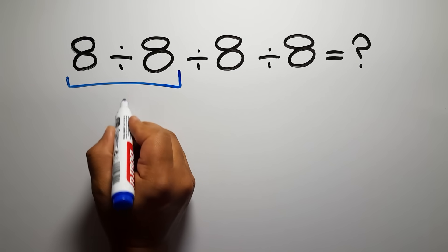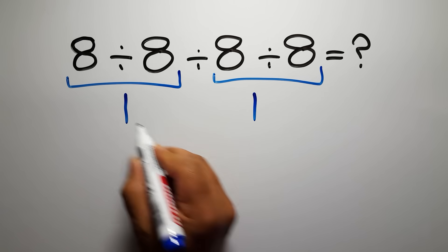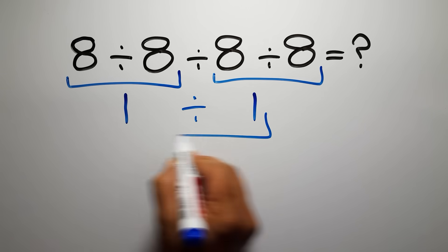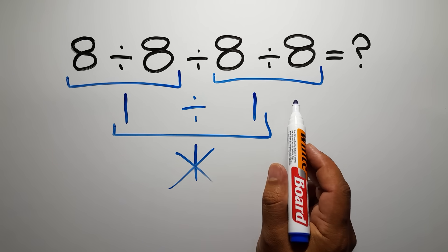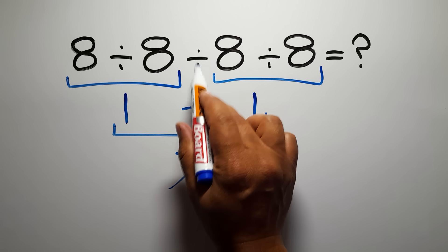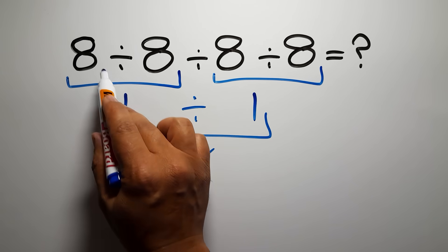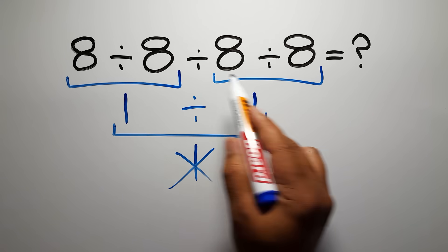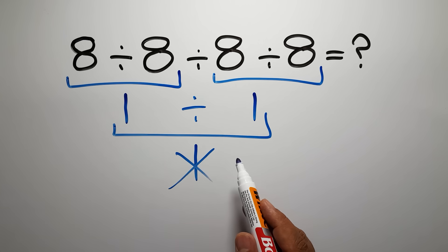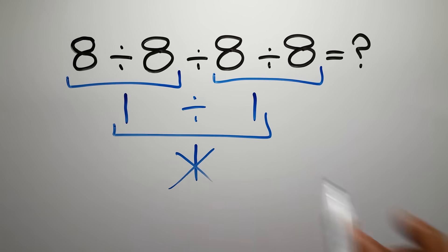8 divided by 8 gives us 1, and again here we have 8 divided by 8, so 1 divided by 1 gives us 1. But this answer is not correct, because according to the order of operations, when we have more than one division in an expression we have to work from left to right. So first we have to do this division, then this division — not this division first. If you do this division before this division, it is wrong.